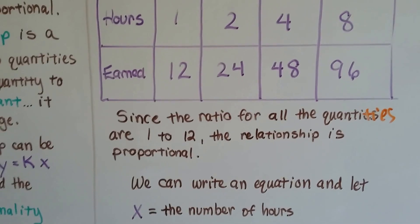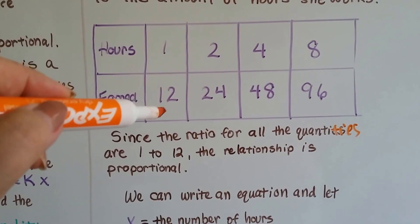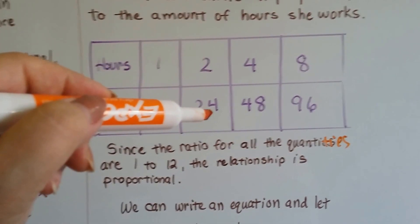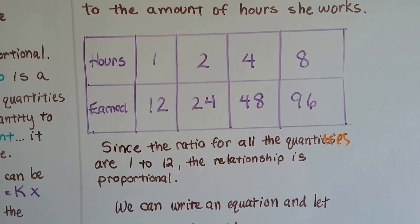Since the ratio for all the quantities are 1 to 12, see? 1 to 12. 1 times 12 is 12. 2 times 12 is 24. 4 times 12 is 48. See?